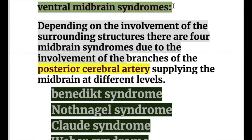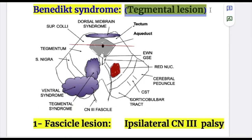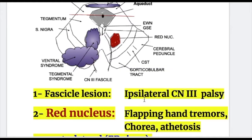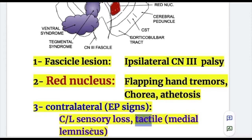Depending on the structures involved, there are four midbrain syndromes supplied by the posterior cerebral arteries: Benedict, Nothnagel, Claude, and Weber syndrome. In Benedict syndrome, there is a tegmental lesion involving the fascicle of the third nerve and the red nucleus. The fascicular lesion causes ipsilateral oculomotor nerve palsy, and the red nucleus lesion causes flapping hand tremors, chorea, and athetosis. There is also contralateral sensory loss — especially tactile — due to involvement of the medial lemniscus.